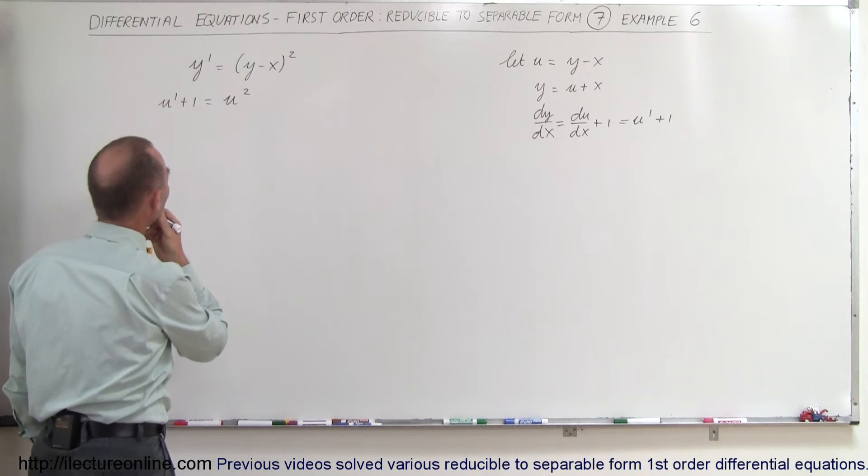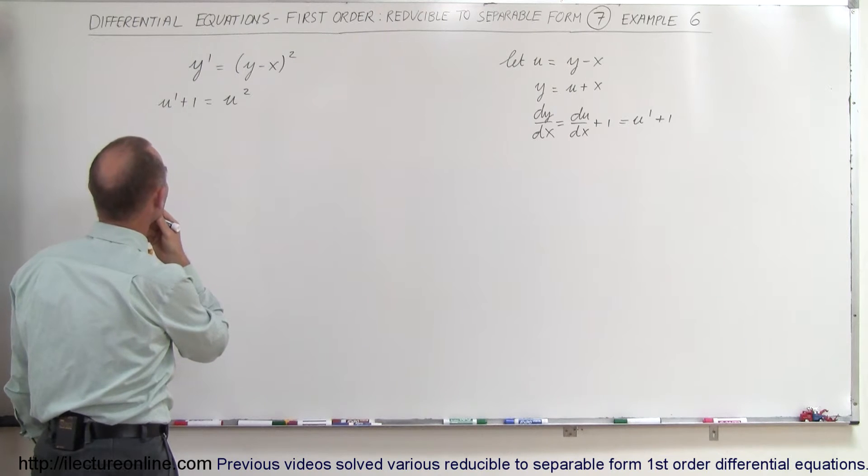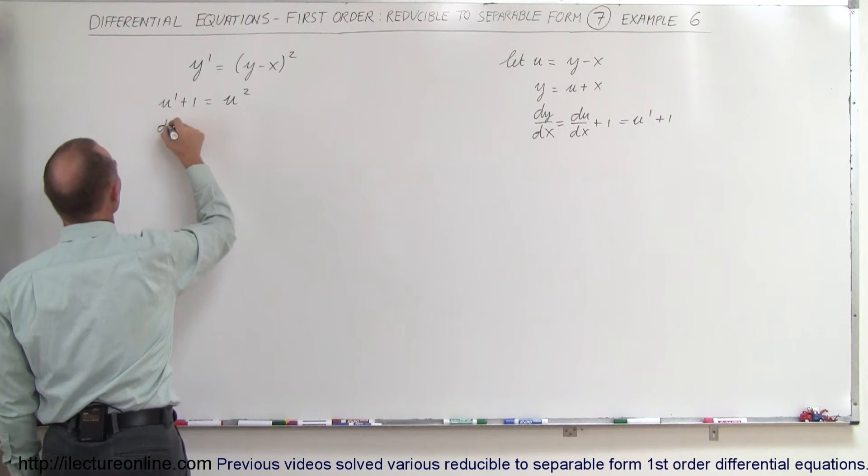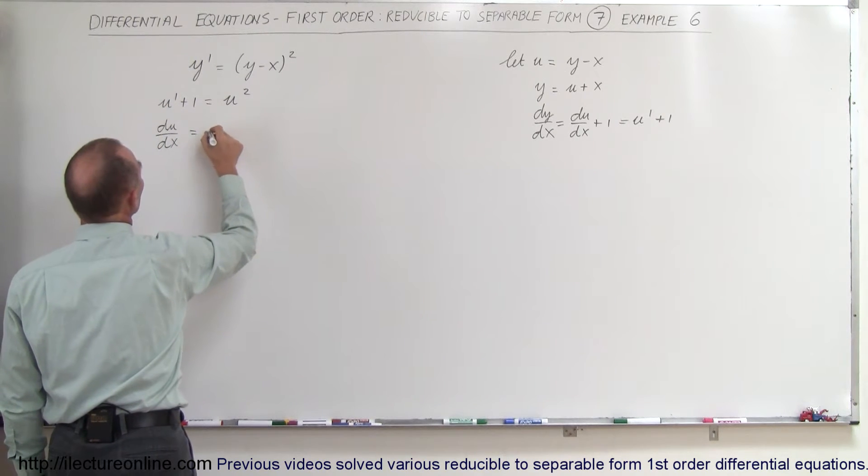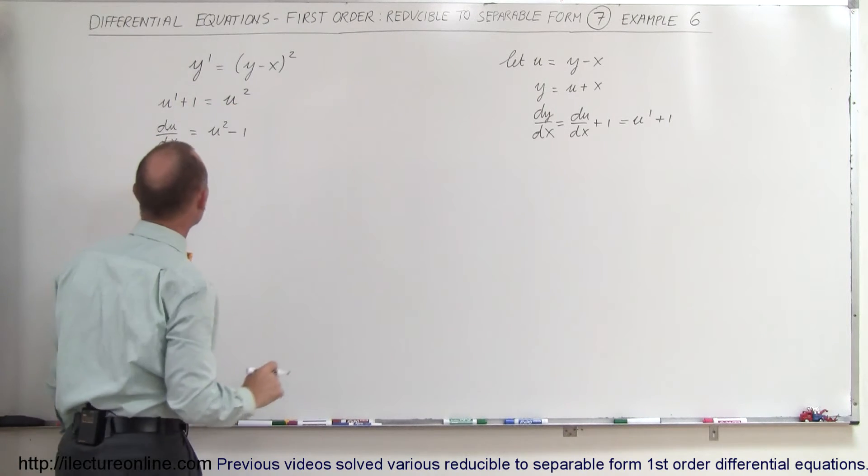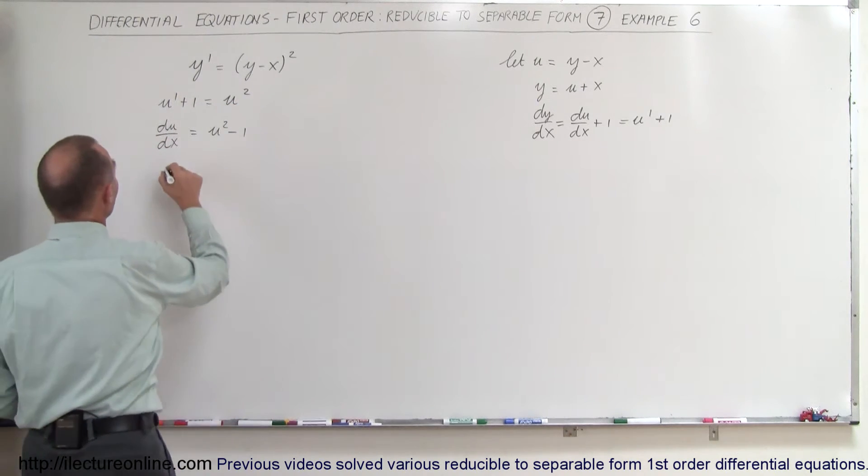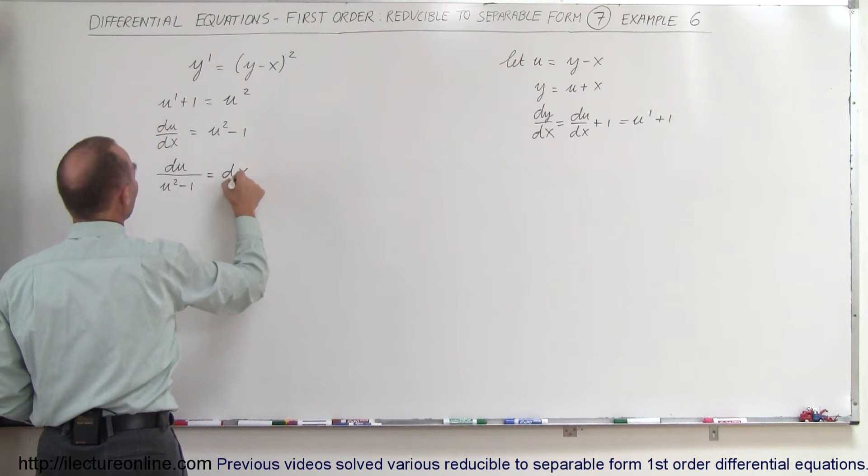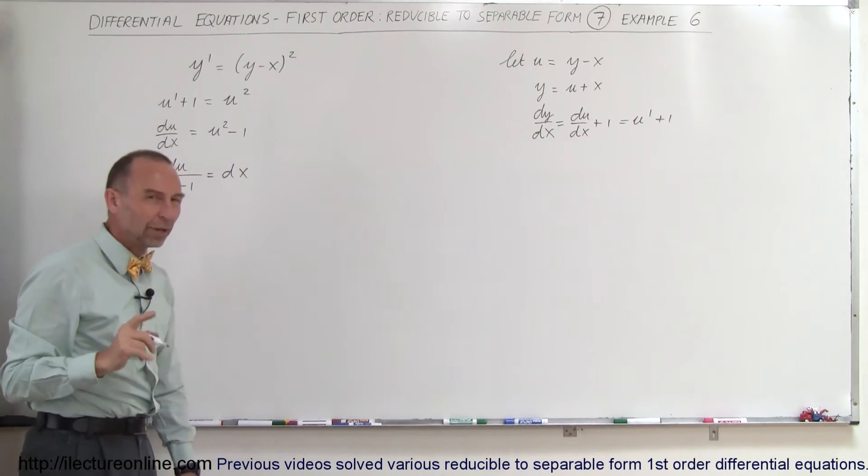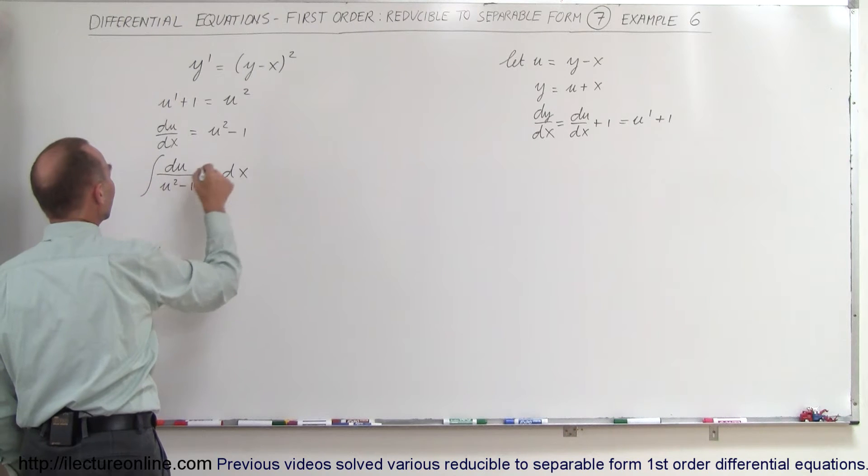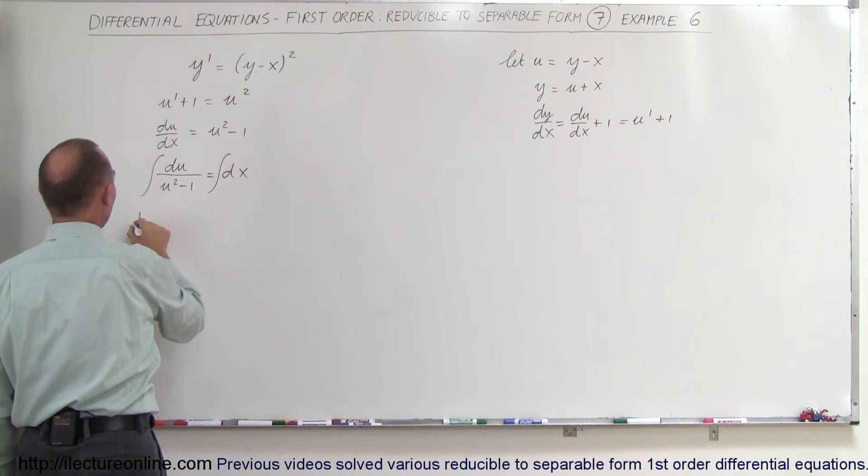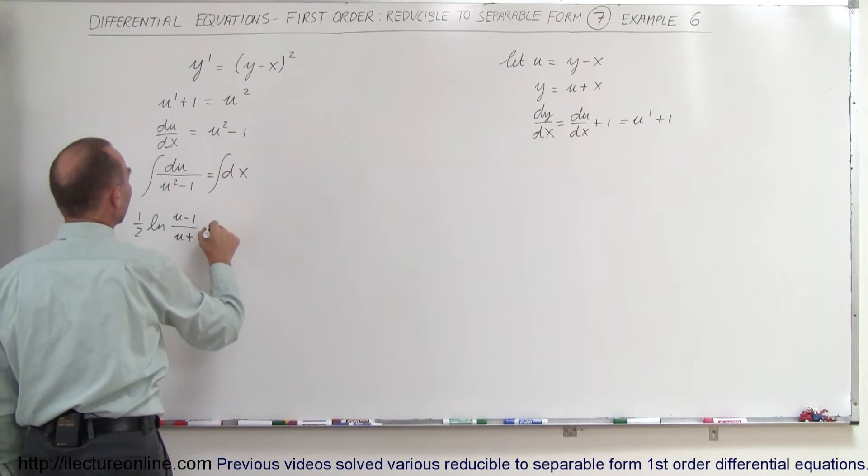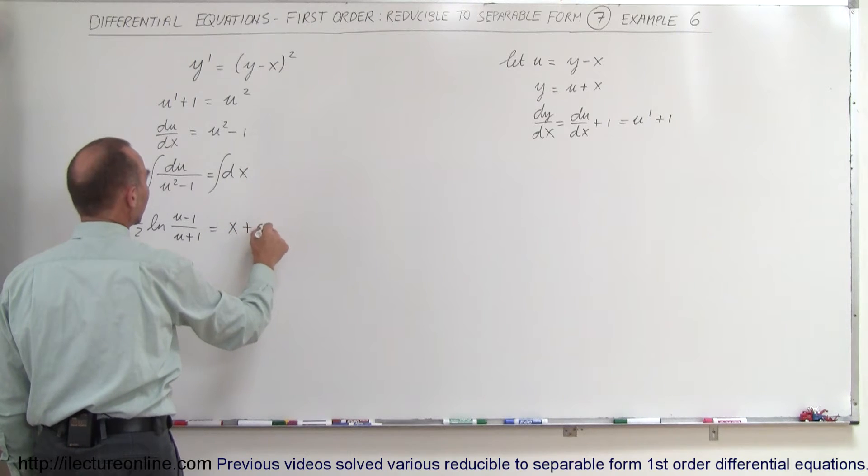So how do we work that? Let's write this as du/dx, because u' is du/dx, equals u squared minus 1. I moved the plus 1 over to the other side so now I can separate the variables. I can write du divided by (u squared minus 1) equals dx. The left side becomes one half times the natural log of (u minus 1) divided by (u plus 1) equals x plus a constant of integration.